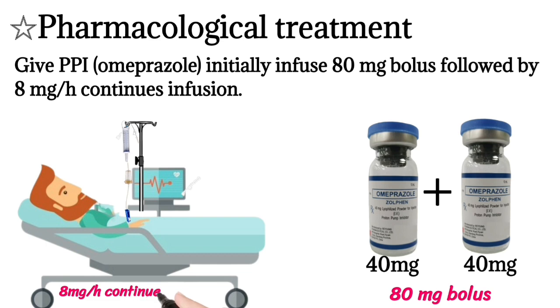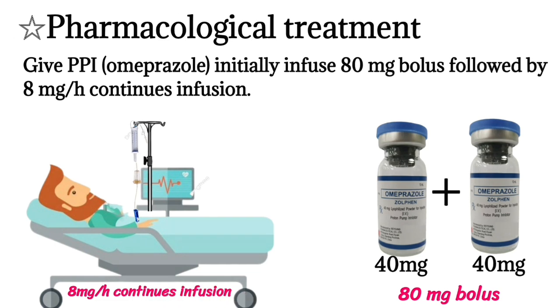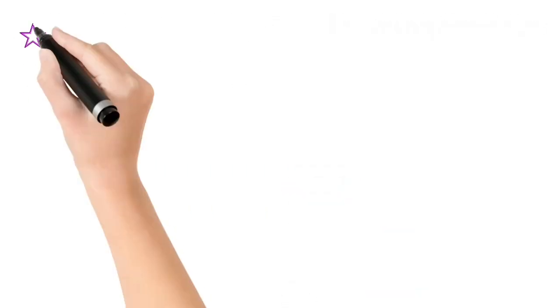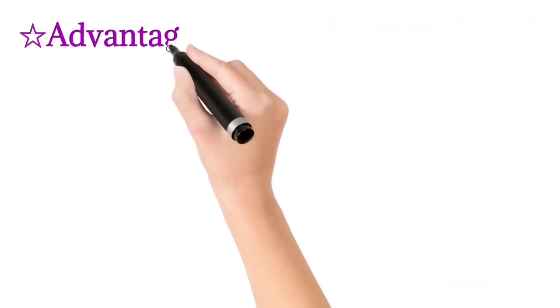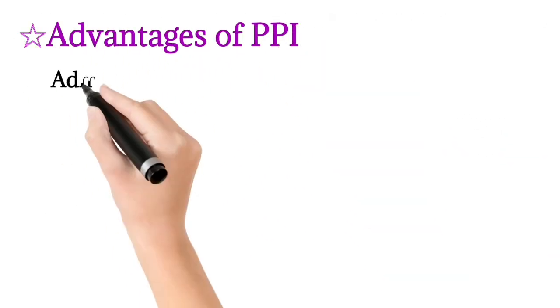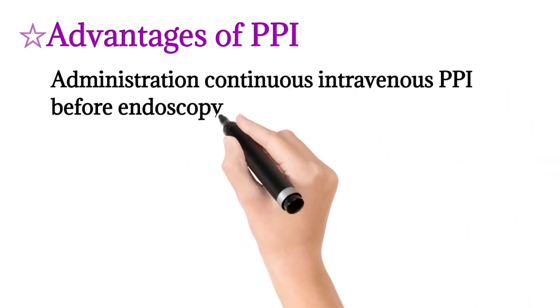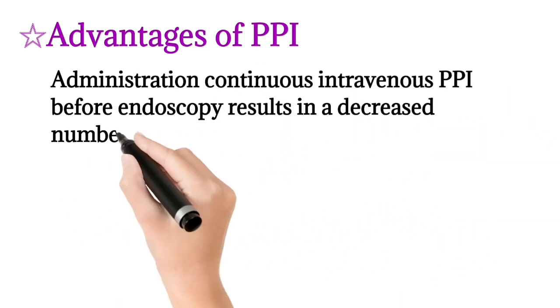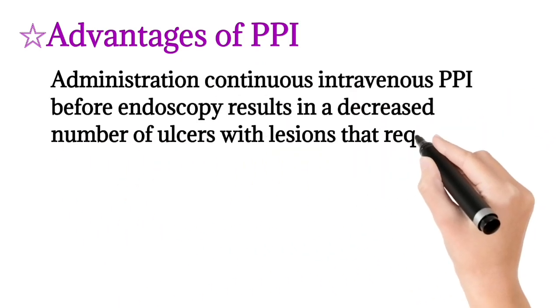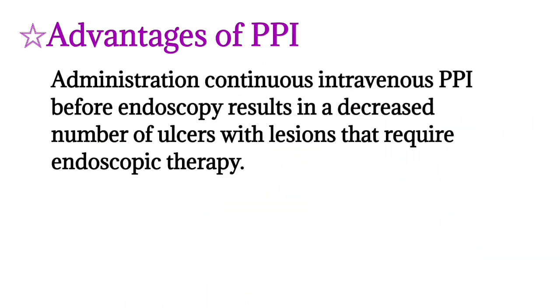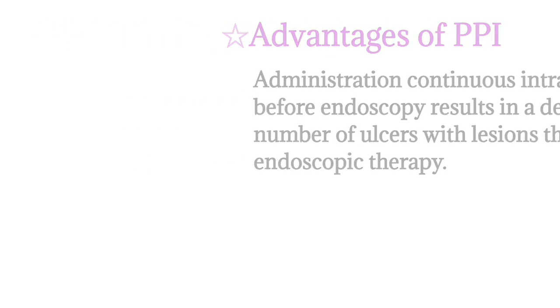Continue the PPI infusion. Intravenous PPI before endoscopy results in a decreased number of ulcers with lesions that require endoscopic therapy.